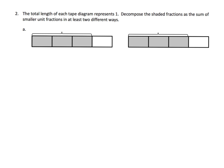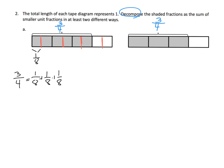Here we're given three-fourths twice and we're supposed to decompose it in two different ways. One way: let's cut each of these fourths into two pieces, so each little piece becomes an eighth. That makes three-fourths the same as one-eighth plus one-eighth plus one-eighth plus one-eighth plus one-eighth plus one-eighth — six eighths total. So I've decomposed three-fourths into a sum of six one-eighths.